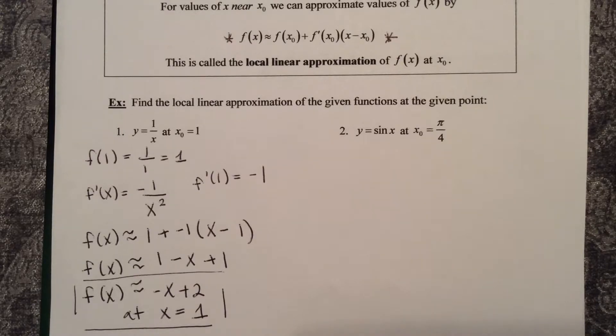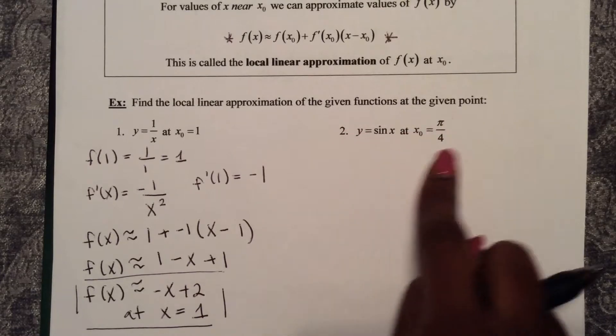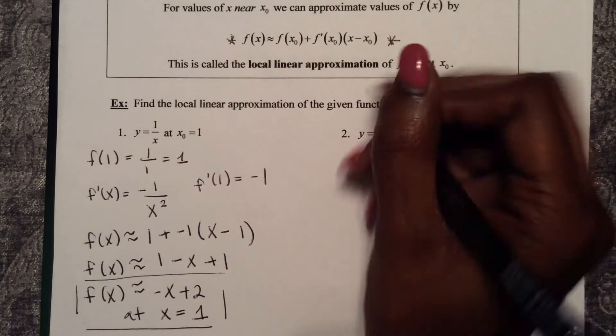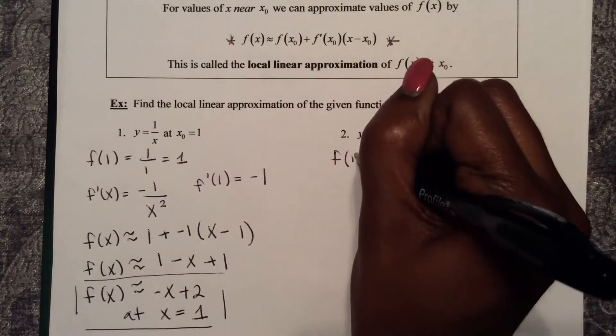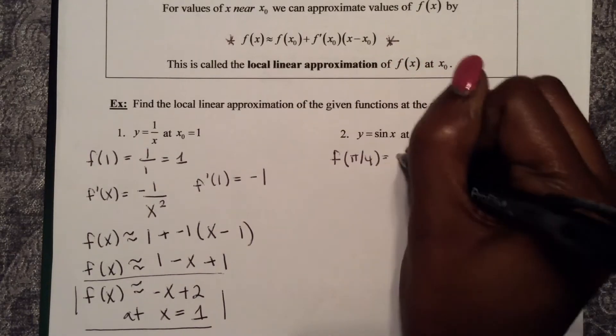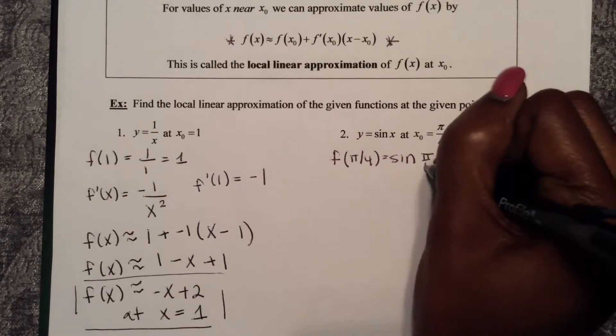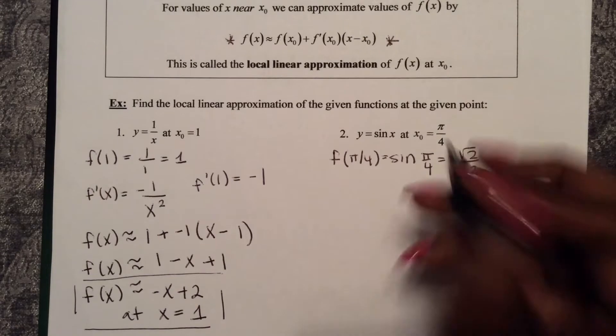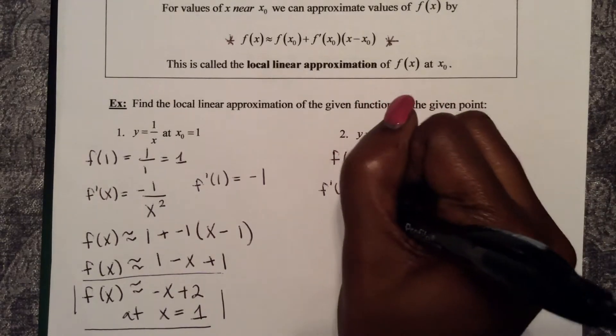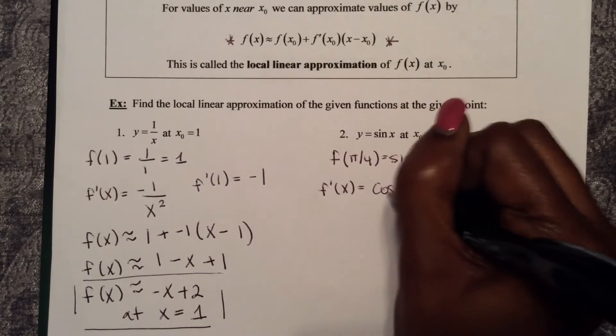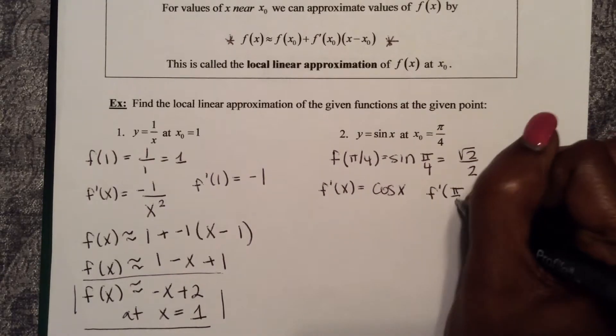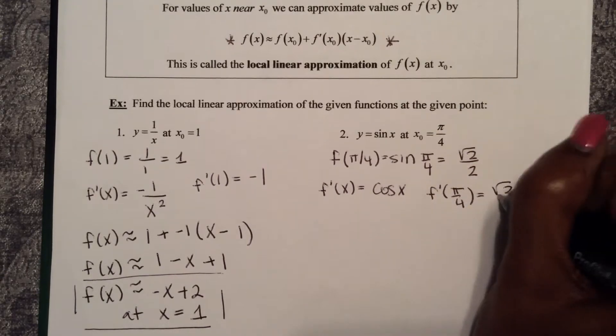So in number 2, now we want to do the linear approximation at x equals pi over 4. So first I need f of pi over 4, which is sine of pi over 4, square root 2 over 2. And then I need to do f prime of x, which is cosine x. So f prime of pi over 4 is square root 2 over 2.